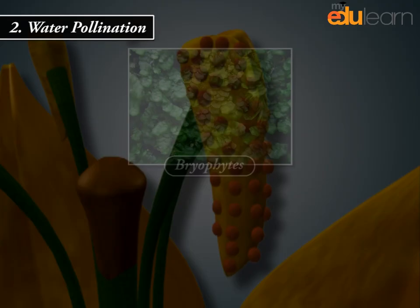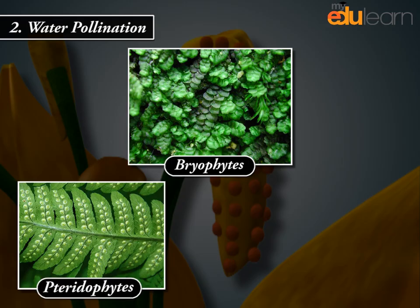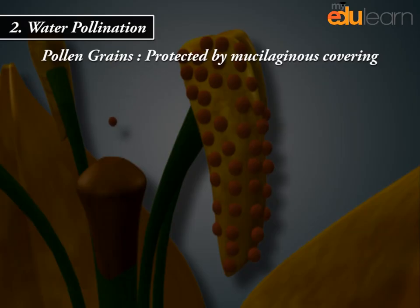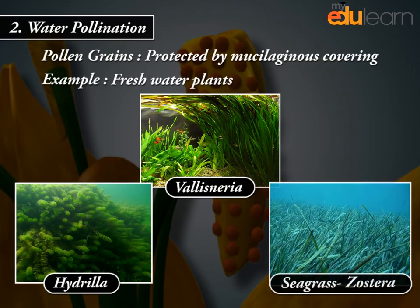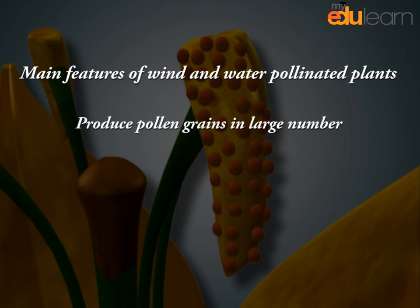Water pollination occurs in bryophytes and aquatic plants. Pollen grains are protected by a mucilaginous covering. Examples of water-pollinated plants include Vallisneria, Hydrilla, and seagrass Zostera. Wind and water pollinated plants produce pollen grains in large numbers and do not produce nectar.